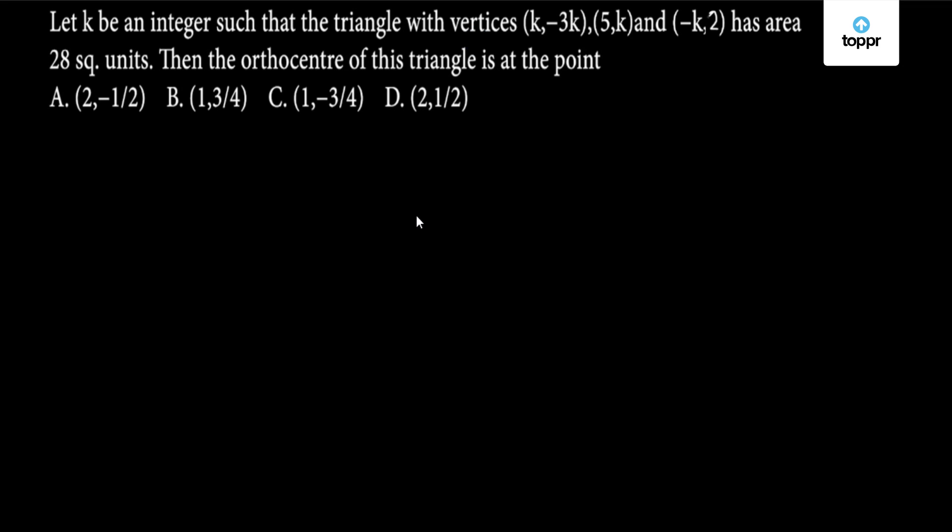This question appeared in this year's JEE Mains examination. Let k be an integer such that the triangle with vertices (k, -3k), (5, k), and (-k, 2) has area 28 square units, and we have to find the orthocenter for this triangle.